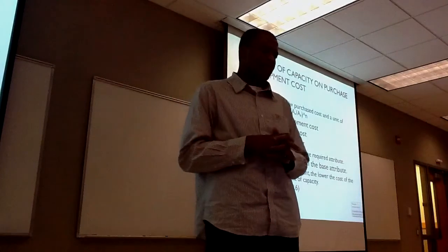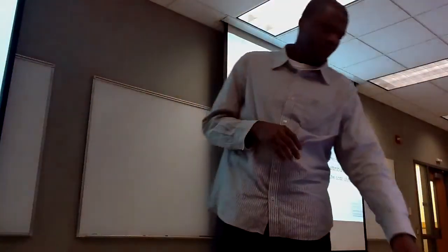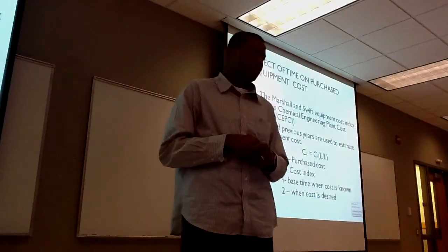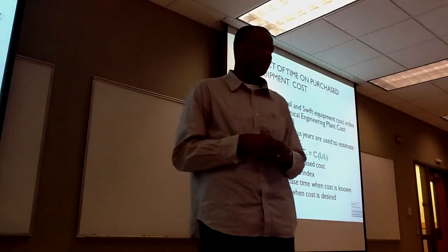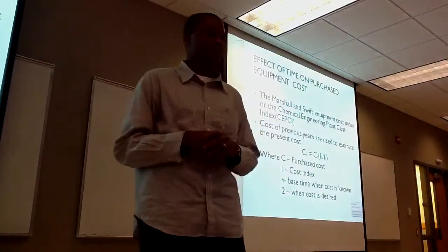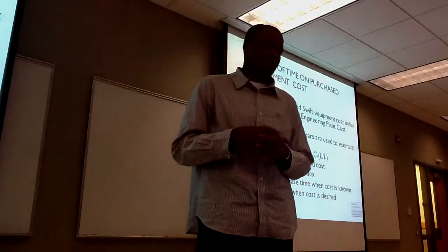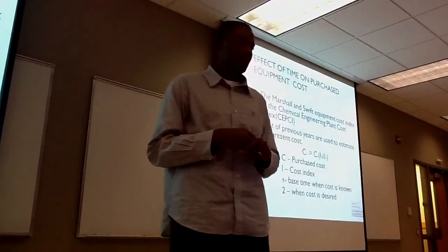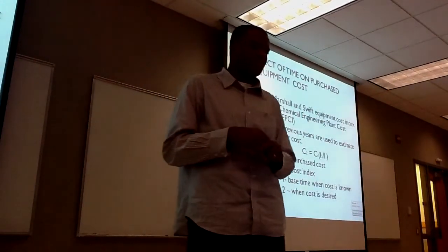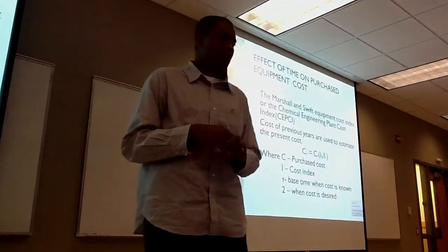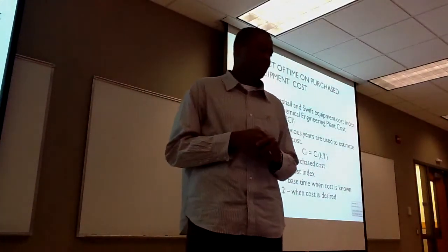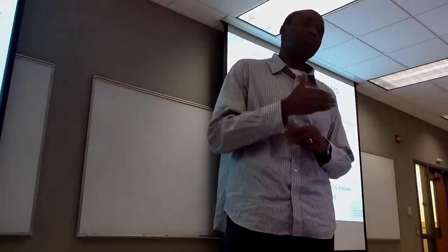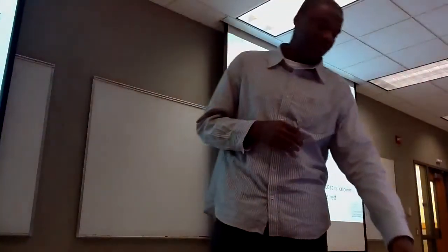The larger the equipment, the lower the cost per unit of capacity. Regarding the effect of time on purchased equipment cost, the Marshall and Smith Equipment Cost Index or the Chemical Engineering Plant Cost Index is used most commonly in estimating equipment cost. Previous years' costs are used to estimate the present cost using the formula: C2 = C1 × (I2 / I1), where C is the purchased cost, I is the cost index, subscript 1 is the base time when the cost was known, and subscript 2 is the present cost of the equipment.